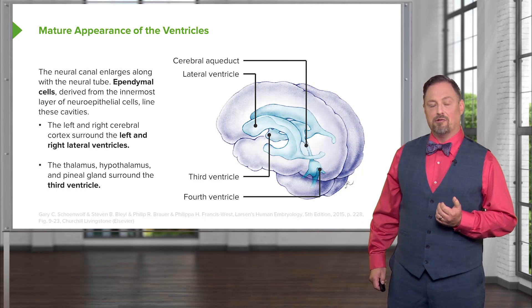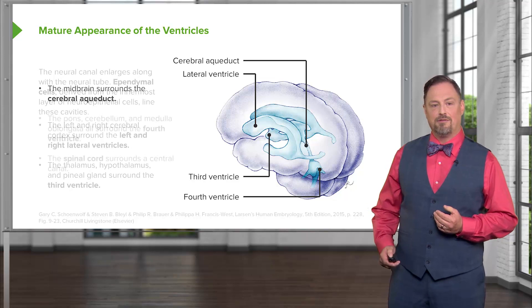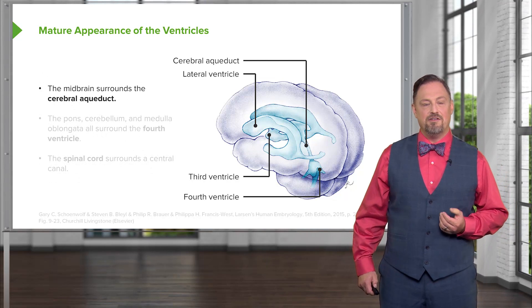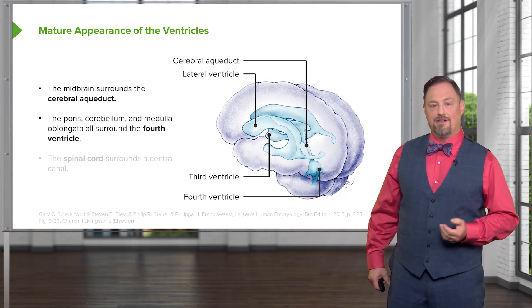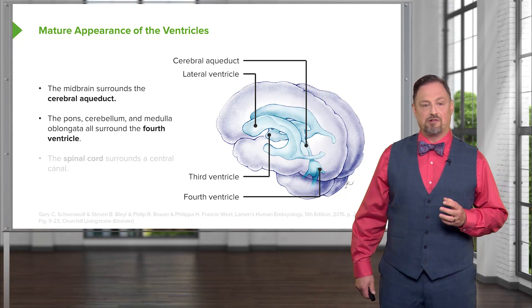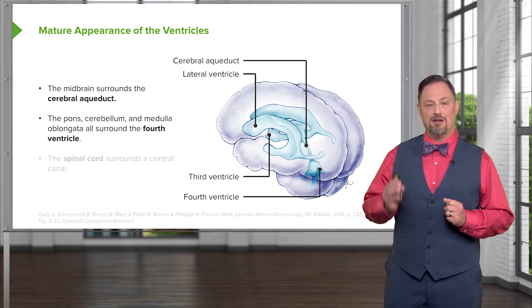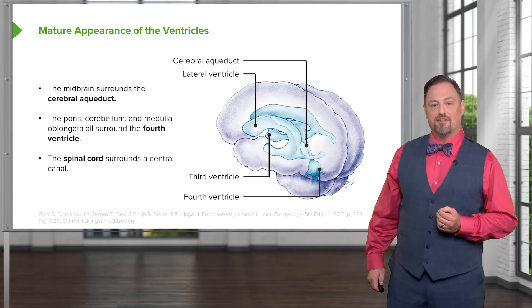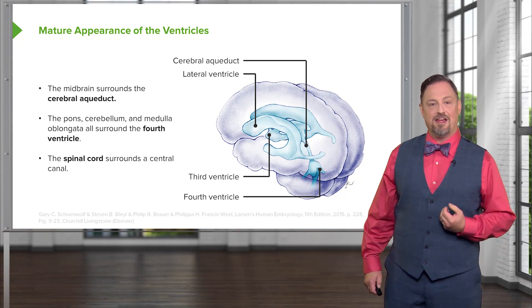The lateral ventricles drain fluid into the third ventricle. From there, the third ventricle fluid drains down the narrow cerebral aqueduct of the midbrain. That CSF — cerebrospinal fluid — gets to the fourth ventricle, which is surrounded by the cerebellum posteriorly and the pons and medulla anteriorly. Lastly, the central canal of the spinal cord extends all the way down to its end.